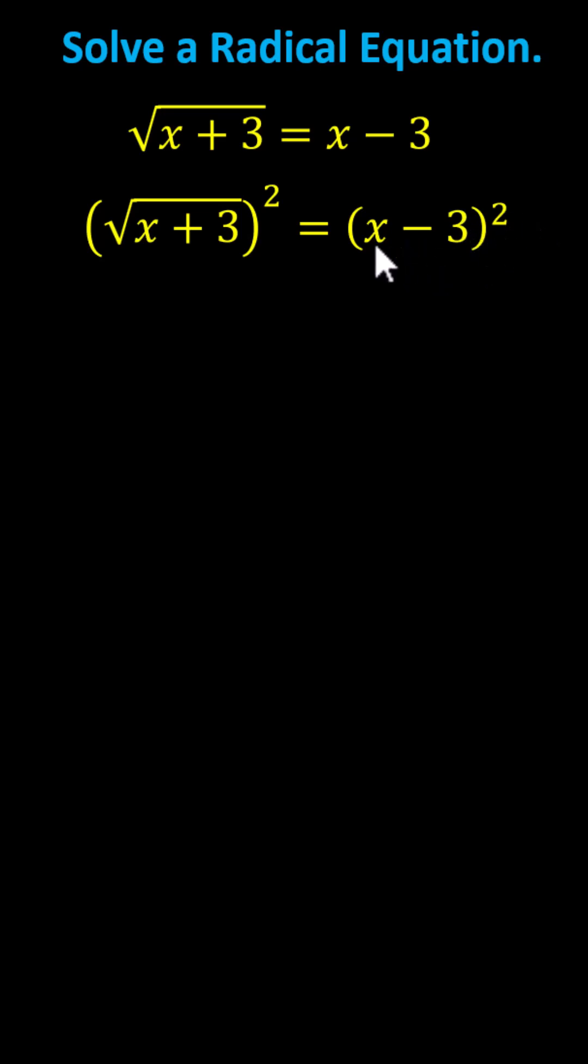Remember, there are no shortcuts here. We cannot just square x and square 3. We have two binomial factors of x minus 3, and when multiplying two binomials, we have four products.